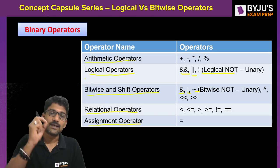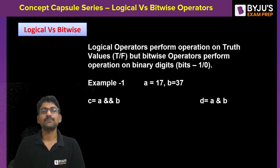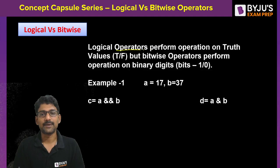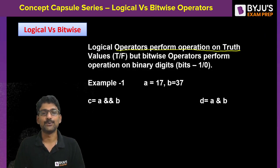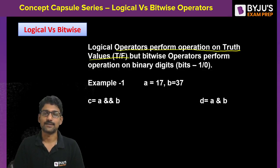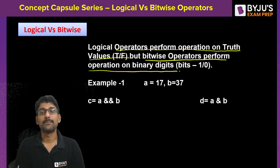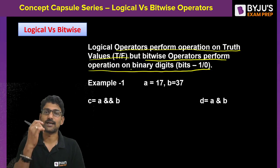Logical operators perform operations on truth values — that is, true and false. But bitwise operators perform operations on binary digits, meaning bits: one and zero.